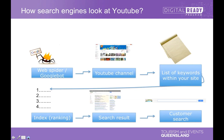How search engines look at YouTube is pretty simple — the same as looking at a website. There's a thing called a web spider or Google bot, and it's essentially technology that crawls down and has a look at your website for SEO purposes, and also your YouTube channel. It gives a list of key keywords — essentially saying 'this channel and these videos are about accommodation on the Gold Coast' — so it knows what it's about.